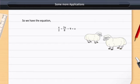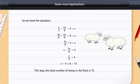we get X is equal to 72. This way, the total number of sheep in the flock is 72.